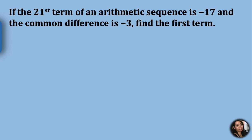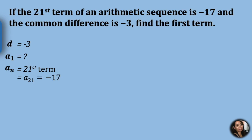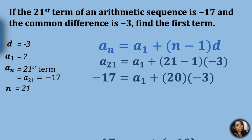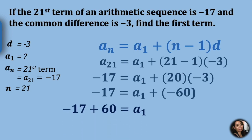Let's explore more problems. If the 21st term of an arithmetic sequence is negative 17 and the common difference is negative 3, find the first term. Identify the given: our common difference is negative 3, a sub 1 is unknown, a sub n is a sub 21 which equals negative 17, and n is 21. Write down your formula and substitute. To solve a sub 1, we need to get the additive inverse of negative 60, which is positive 60. Negative 17 plus 60 equals a sub 1, giving us a sub 1 equal to 43.